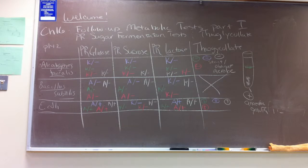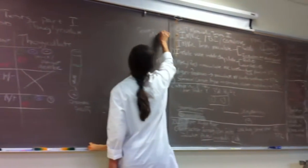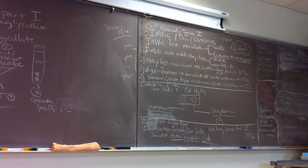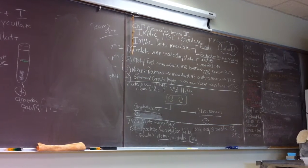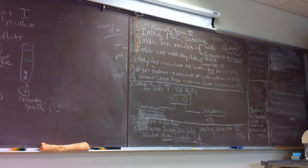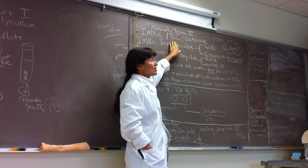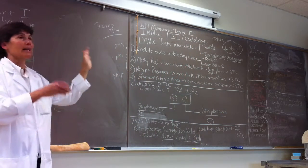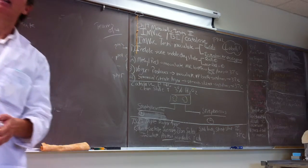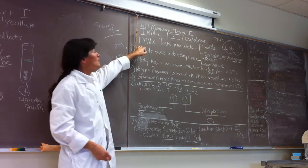We're going to inoculate another series of tests today - Chapter 17 Metabolics Part 2. The tests are the IMVIC series plus triple sugar iron agar slants and catalase tests. IMVIC stands for four different tests: I for the Indol test, M for the methyl red test, V for the Voges-Proskauer test, and C for the Simmons citrate agar test.